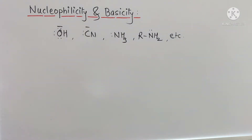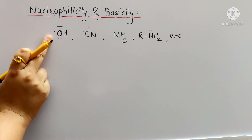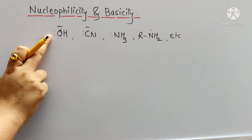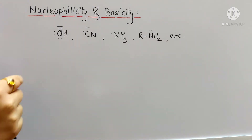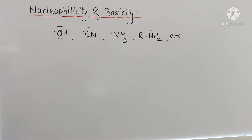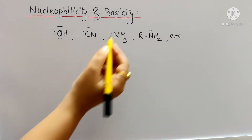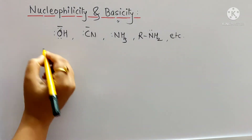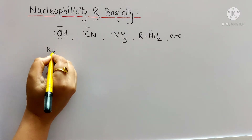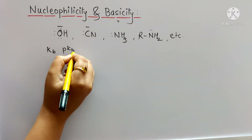This unshared electron pair can be utilized for the reaction with electron deficient species. All these nucleophiles are also Lewis bases, and their relative strength is expressed in terms of basicity. The basicity is measured in terms of KB or pKB.